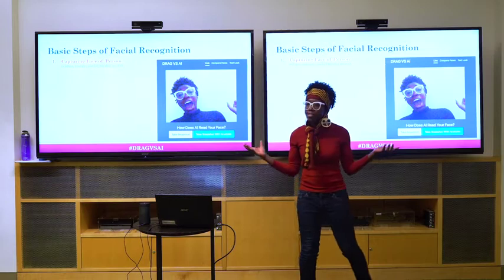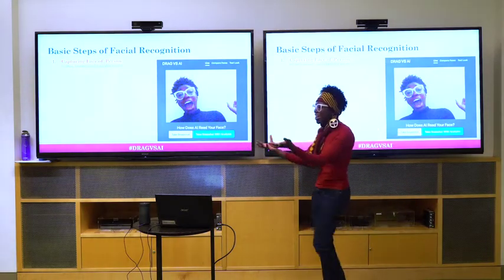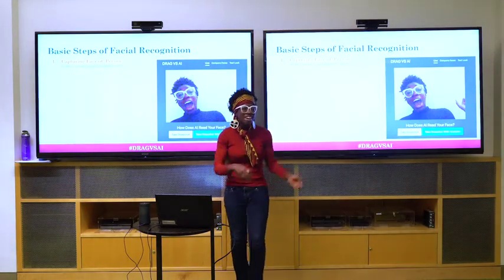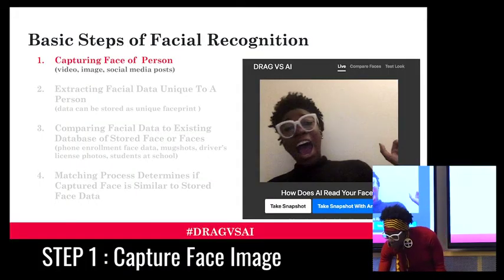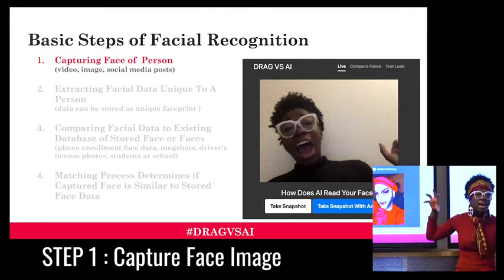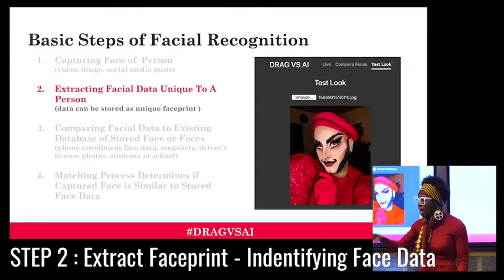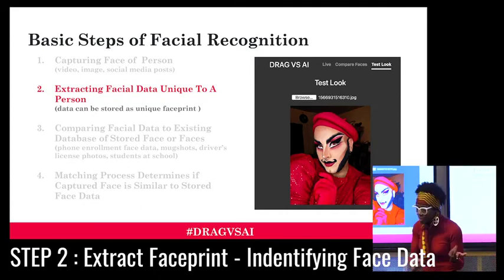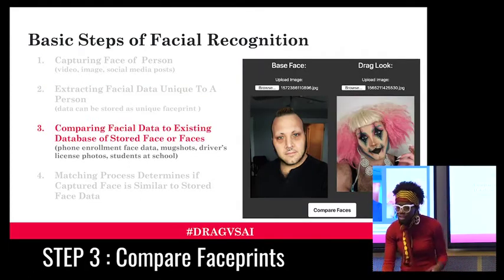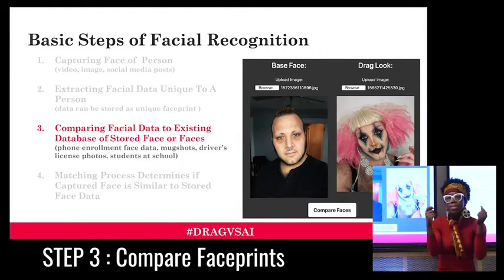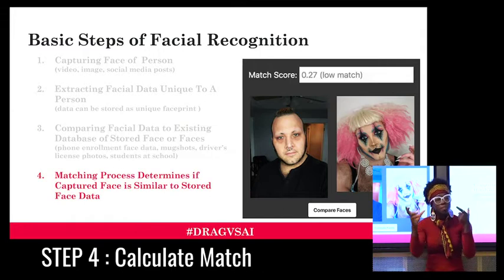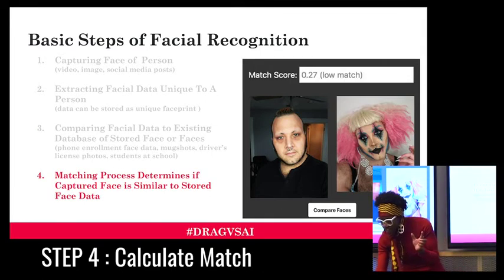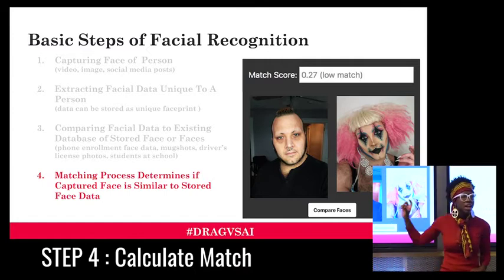So what are the basic steps for this to work? First, we have to get a photo of your face — maybe you take a photo, maybe you get it from the internet, but first you capture a face. Once you capture a face, the machine then makes a unique face print. Just like a fingerprint is unique to you, you can also get a face print unique to an individual. Now that you have this face print, you compare one face print with another to make a determination — this is called face matching, and you can get a match score.